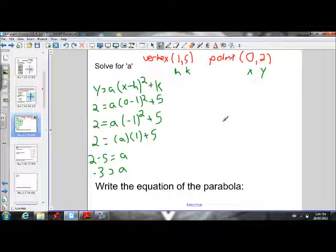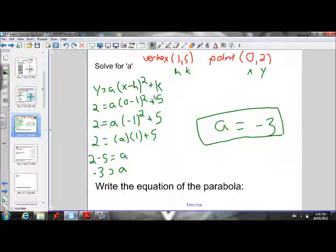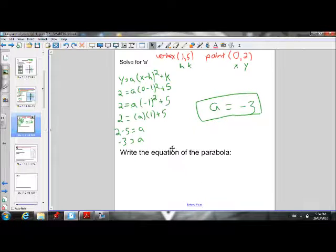So our a value, a equals negative 3. We have discovered our a value. So when we write the equation of a parabola, we fill in values for everything except for x and y, because x and y can stand for the coordinates of any point on the parabola. So when we write the general equation, we don't want to sub in values for x and y. We want sub in values for a, h, and k.